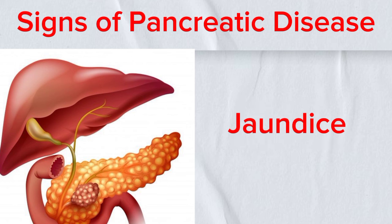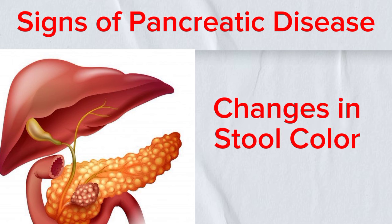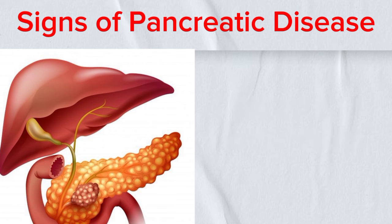Fifth, jaundice: yellowing of the skin and eyes, known as jaundice, can occur when pancreatic diseases affect the bile duct, leading to bile buildup. Sixth, changes in stool color: pale or greasy stools may indicate pancreatic diseases affecting the production of digestive enzymes.